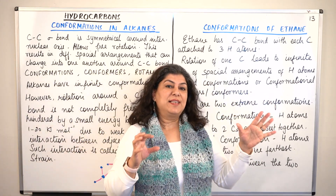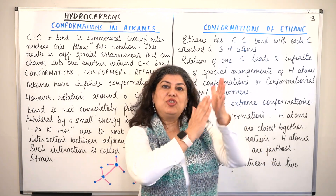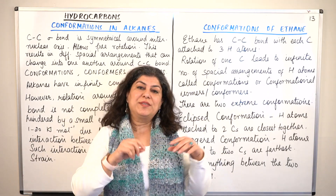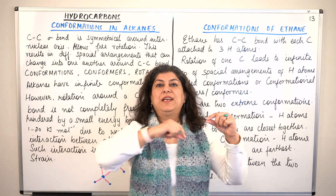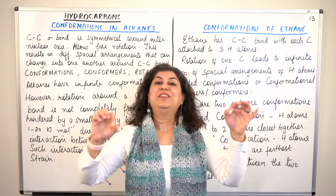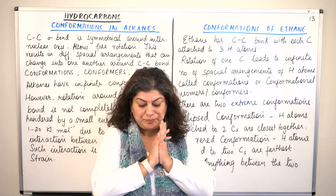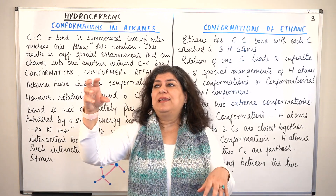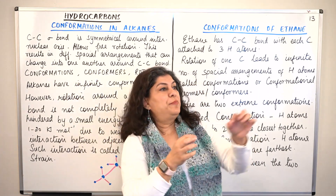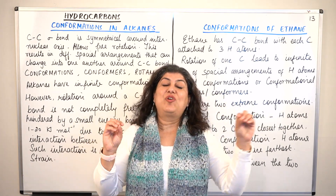Structural isomers are formed due to the difference in bonding — the structure is different because the bonds are made differently. These are further of four categories. The first is chain isomerism, where the compound can be a straight chain, a branched chain, or have double branches — the arrangement of the carbon chain is different. There is also position isomerism, where a functional group may be present on the last carbon, the second carbon, or in a branch, making different positional isomers.